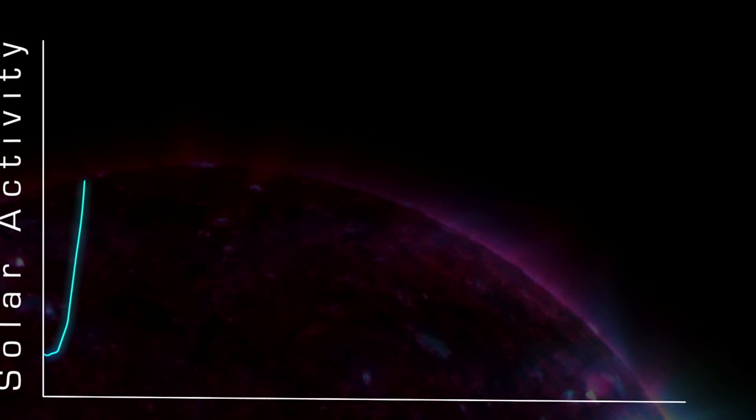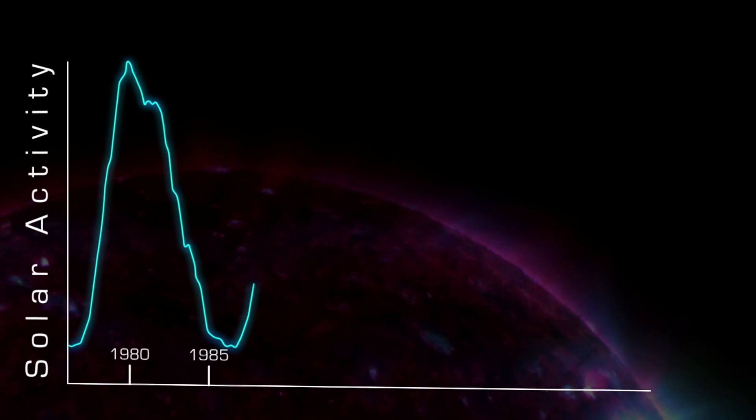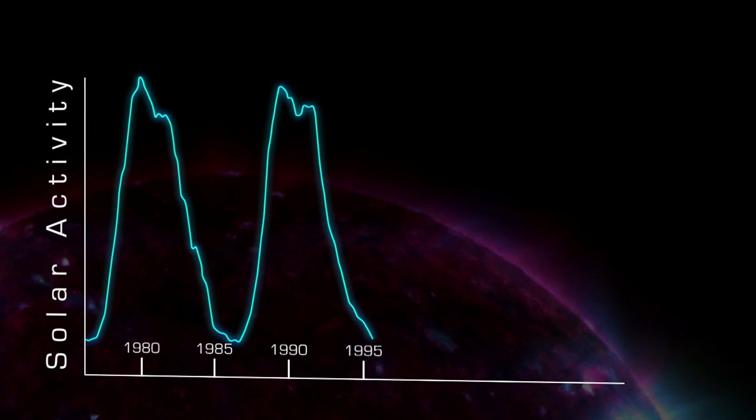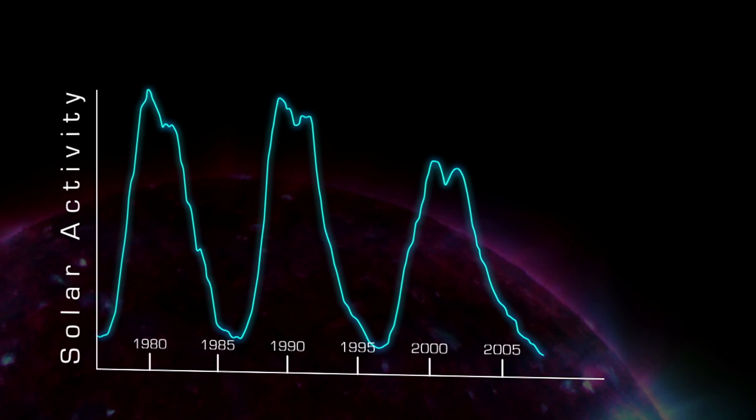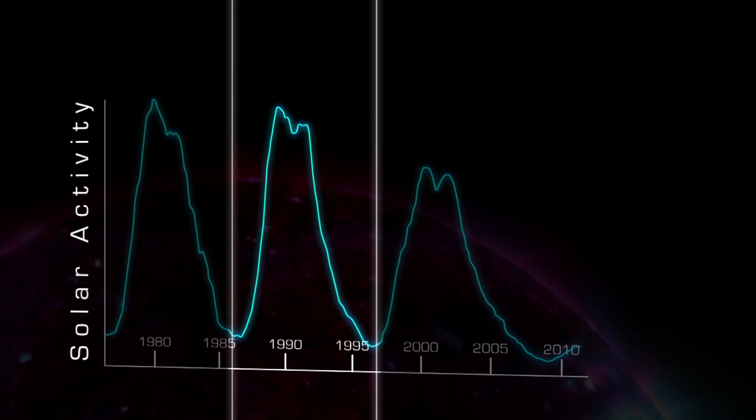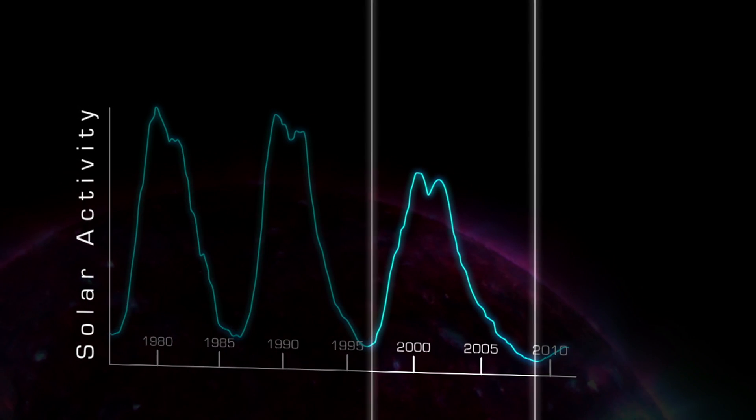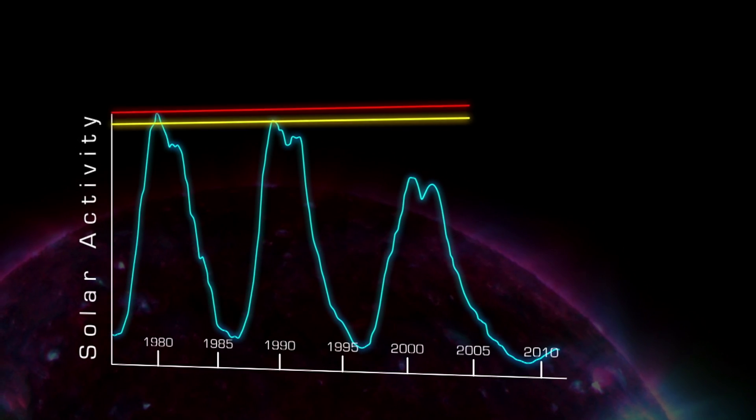In addition to these abrupt changes in activity, the Sun also has a long-term, more regular pattern of change. This pattern is called the sunspot cycle, and a single cycle lasts for about 11 years, although it can be as short as 8 or as long as 14, and it can vary dramatically in intensity.